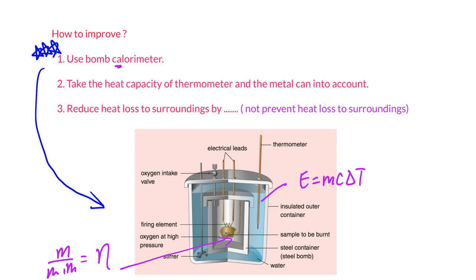Pay attention to the spelling — it is 'calorimeter', with 'ca', not 'co'. If they ask for improvements other than the bomb calorimeter, you may say: take the heat capacity of the thermometer and metal can into consideration. If that is already mentioned, then you can say: reduce heat loss to surroundings — for example, use a polystyrene board, or wrap the metal can with paper, wool, or cotton. Remember, do not write 'prevent heat loss to surroundings' — that word is wrong. I've mentioned this many times: don't write 'prevent'.